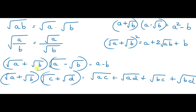Then root A plus root B into root A minus root B is of the form A plus B into A minus B. Since A plus B into A minus B equals A square minus B square, root A plus root B into root A minus root B equals A minus B.